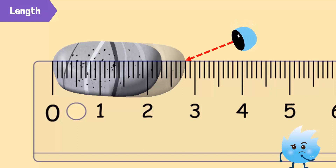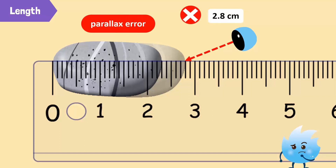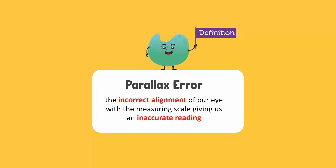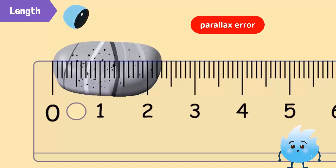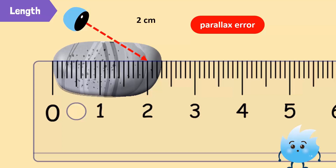What if Spiky moves his eyes slightly to one side so that instead of 2.3 centimeters he reads 2.8 centimeters? Spiky is committing a parallax error. A parallax error occurs when we do not correctly align our eye with the measuring scale, so that our reading becomes inaccurate. Similarly, if he moves his eye to the other side, he will also be committing parallax error, since his reading will be too low.